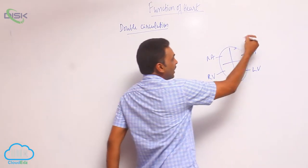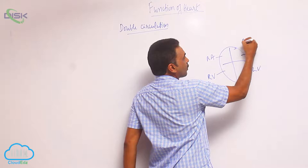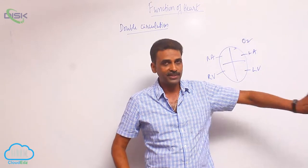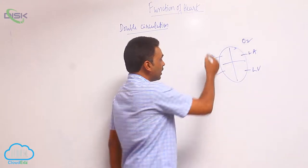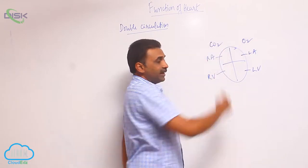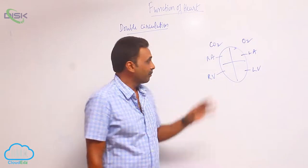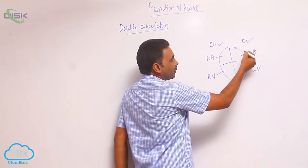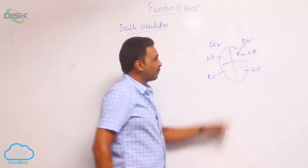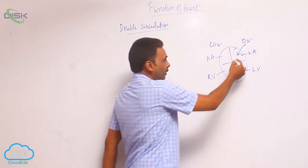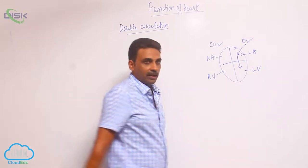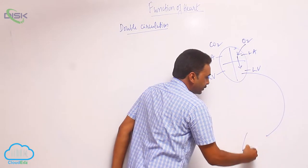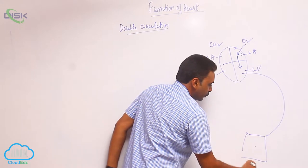On the left side it is oxygenated blood, and on the right side it is deoxygenated blood. The oxygenated blood which is coming into the left atrium will enter into the left ventricle, and from the left ventricle it is pumped to tissues.